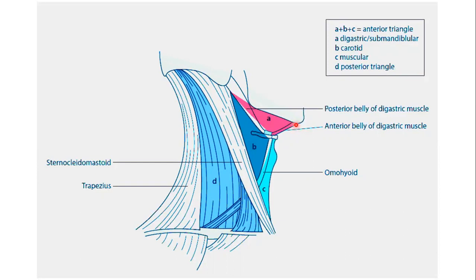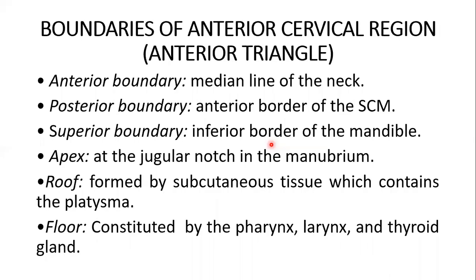This is very simple. Anteriorly, this is the anterior median line. Posteriorly lies the sternocleidomastoid. Above, this is the base formed by the lower part of the base of the mandible. And the apex is at the jugular notch. The roof is formed by subcutaneous tissue which contains the platysma. And the floor is constituted by the pharynx, larynx, and the thyroid gland.